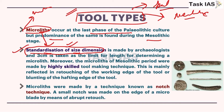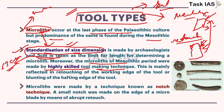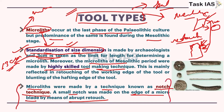Microliths of the Mesolithic period were made by a highly skilled tool mechanic technique because retouching was done. Retouching means focusing on specific parts of a tool - making that part smoother or another part sharper by applying targeted force. In Lower Paleolithic, force was sometimes random and flake tools formed randomly, but here everything is more organized and specialized. Microliths were made by a technique known as the notch technique, where a small notch was made on the edge of a micro-blade by means of abrupt retouch.